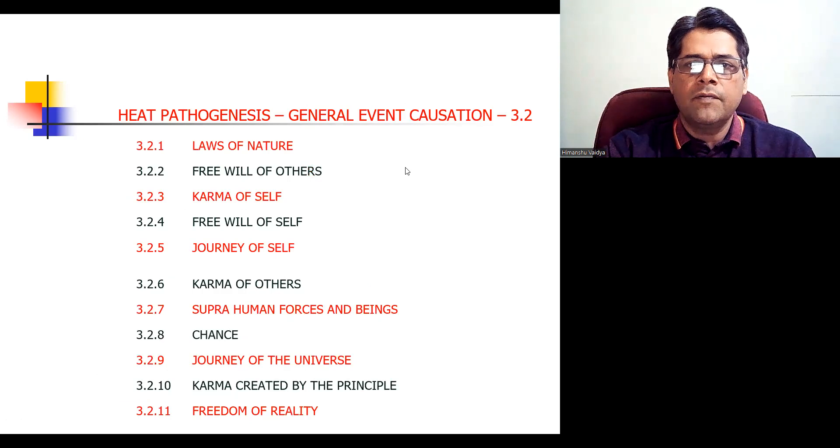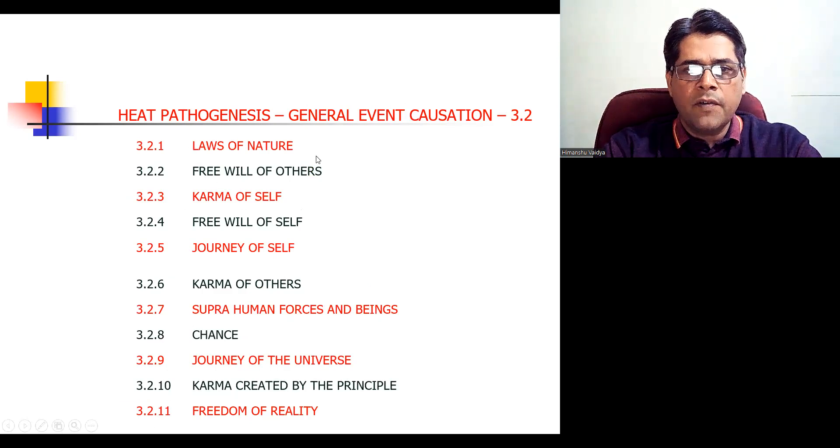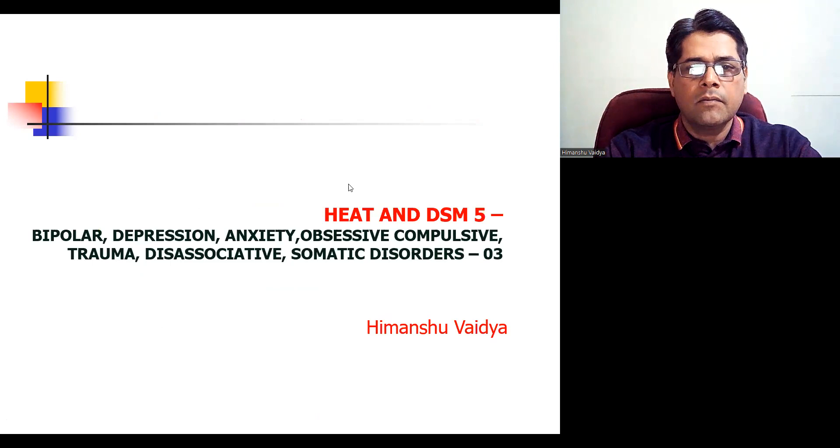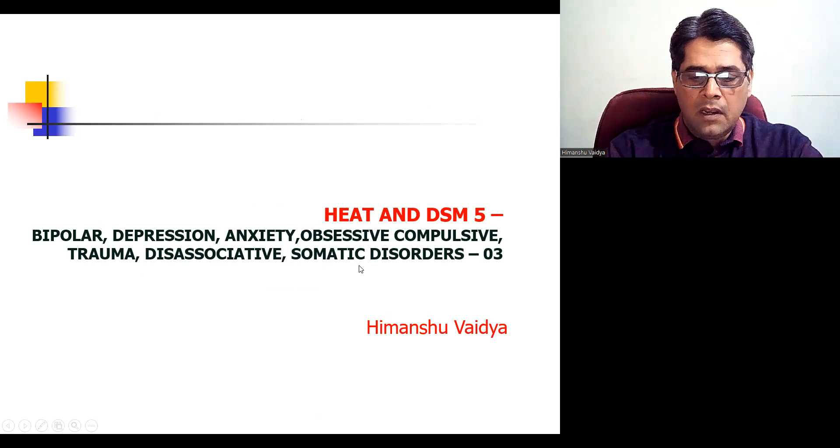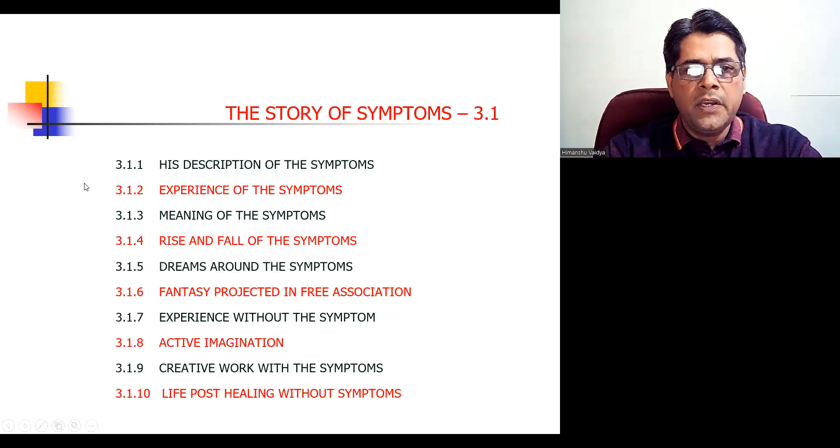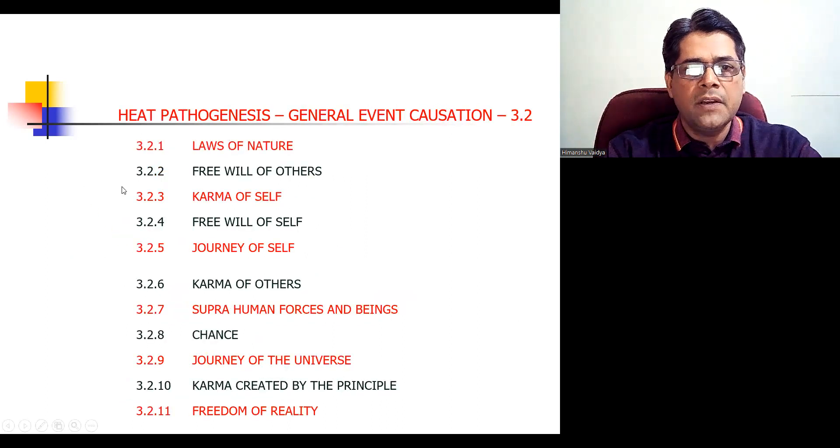We come to the pathogenesis and all of these are very useful, the standard process we have seen last time. Now coming to the application of general event causation. In all of this, the laws of nature and the free will of others and karma, the first three. They will be operative practically in all of this. Bipolar, depression, anxiety, OCD, disassociation, somatization. In all of them, 3.2.1, 3.2.2, 3.2.3, they will be the core.